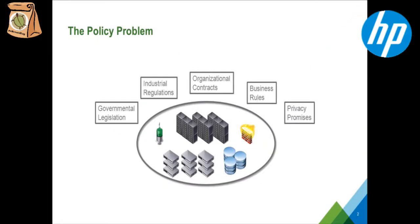We'll start with a quick look at where the state of things are today. The policy problem as we define it is that you have many different inputs, many different types of sources driving policy in your cloud environments. You might have policy coming from government legislation requiring certain configurations or placement of data — things like HIPAA or PCI. You might have industrial regulations, organizational contracts such as SLAs or business-to-business agreements, business rules about resource allocation, and privacy promises to your customers. So you have all of these different sources of policy coming together.